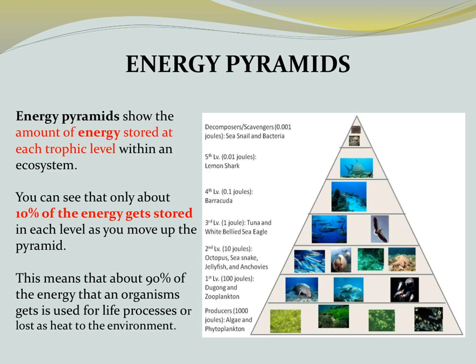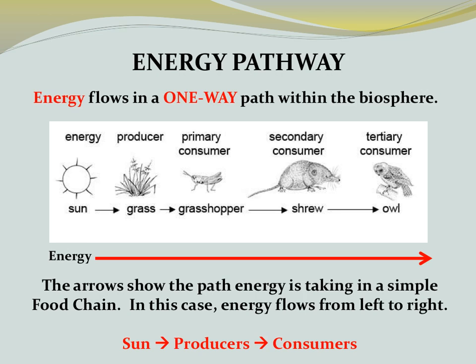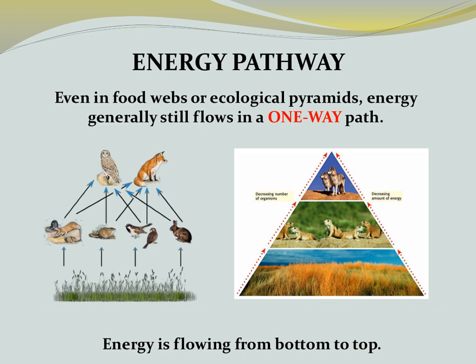Perhaps the most useful ecological pyramid is an energy pyramid, which shows the amount of energy stored at each trophic level within an ecosystem. Only about 10% of the energy gets stored in each level as you move up the pyramid, meaning about 90% is used for life processes or lost as heat to the environment. Energy flows in a one-way path within the biosphere — from the sun to producers to consumers — and this is true whether you're looking at a food chain, a food web, or an ecological energy pyramid.